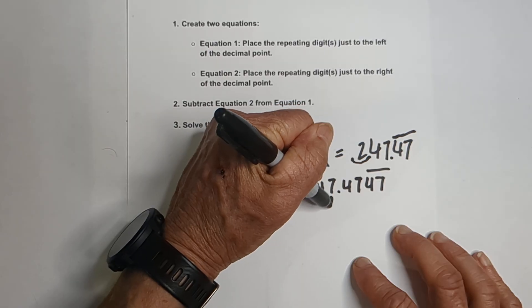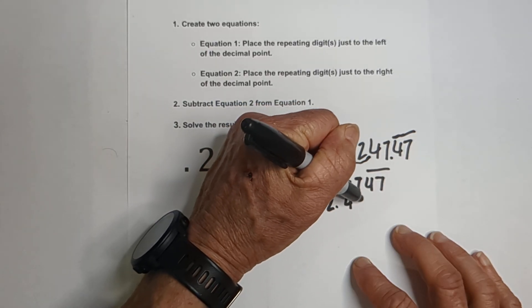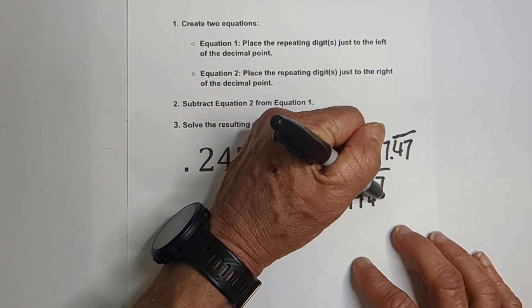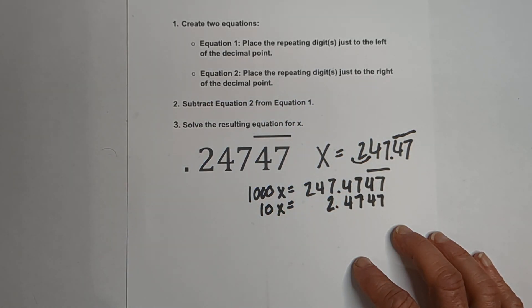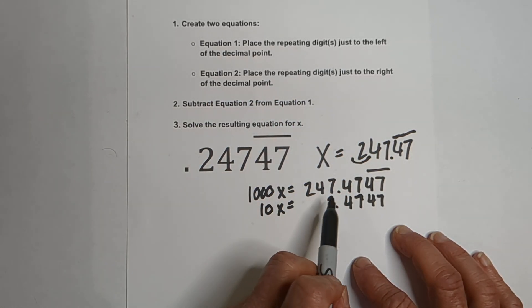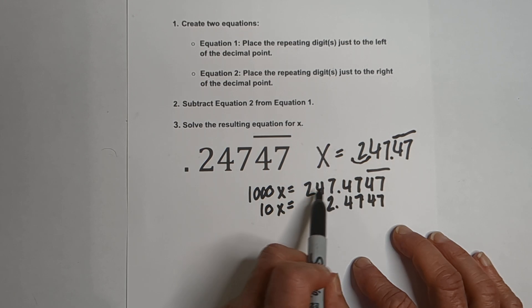and that gives us 24.4747 repeating. Okay, so now we have two equations. One is just to the left, the 47, and the other is just to the right.